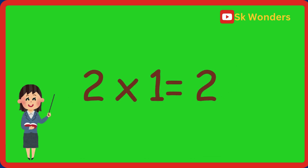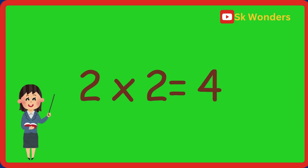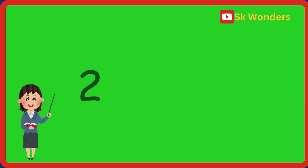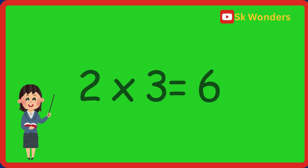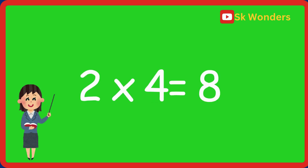Two times one is two. Two times one is two. Two times two is four. Two times two is four. Two times three is six. Two times three is six. Two times four is eight. Two times four is eight.